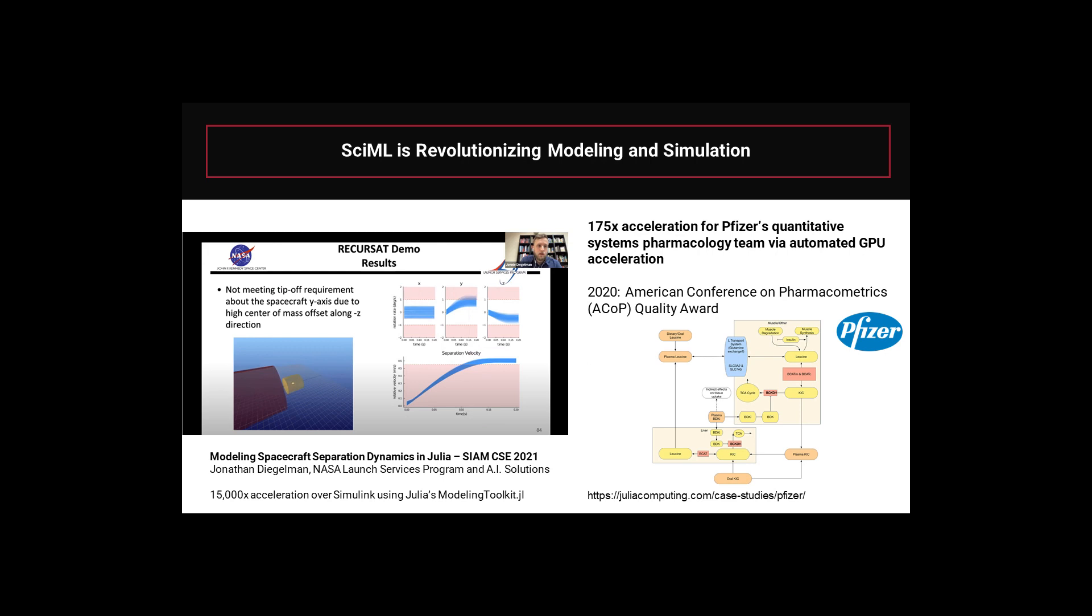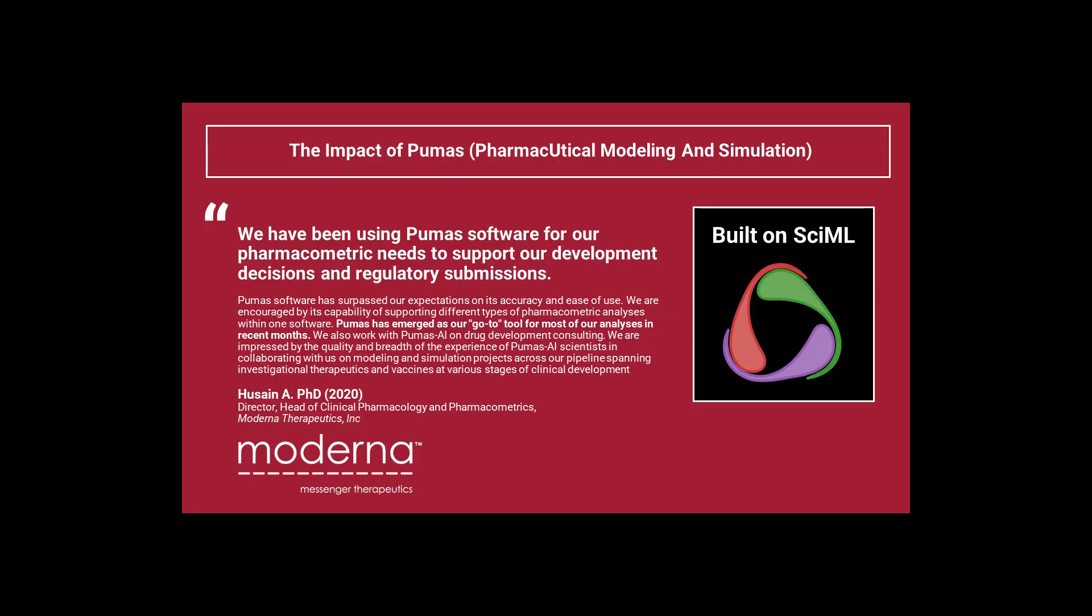NASA Launch Services engineers saw a 15,000x acceleration by adopting SciML tools, while Pfizer's Systems Pharmacology team saw 175x. The acceleration of the Moderna trials of 2020 has been attributed to the open source SciML tools.